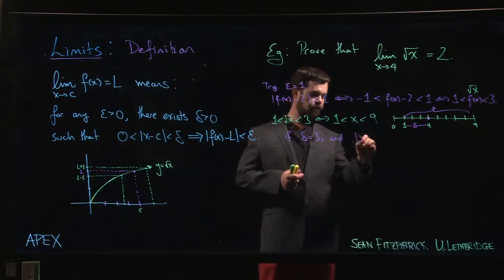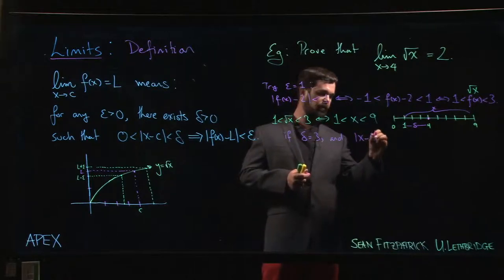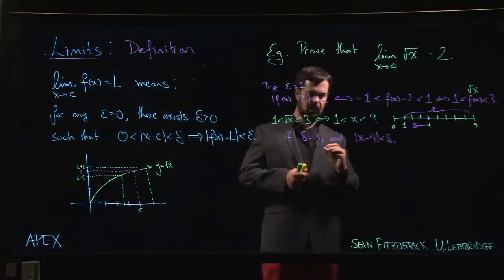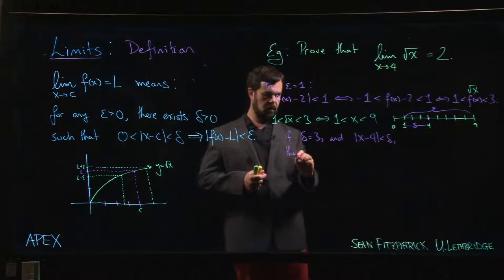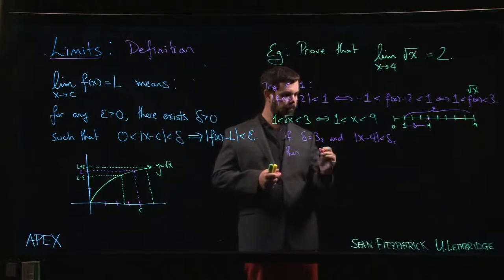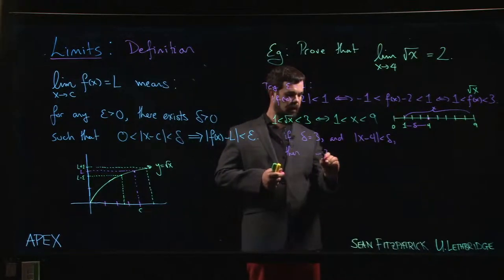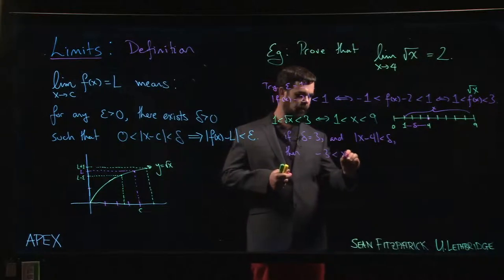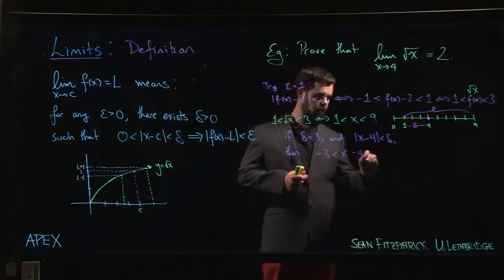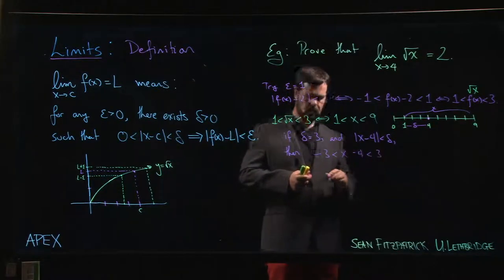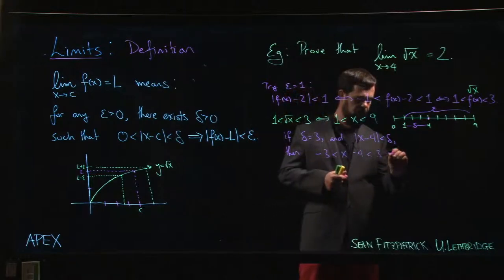And if x minus four is less than delta, what does that tell me? That tells me that minus three is less than x minus four is less than three, which tells me that x is between one and seven.